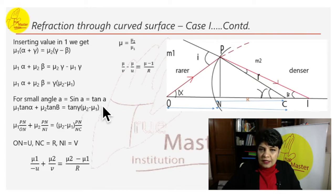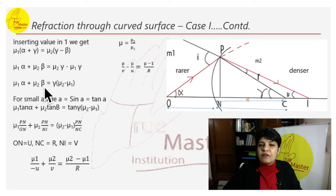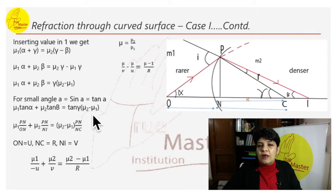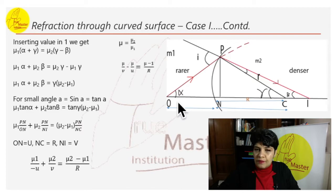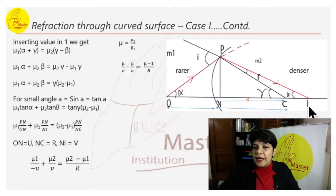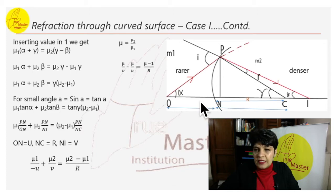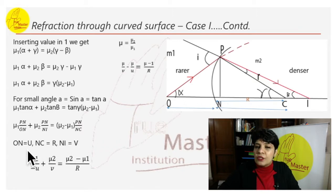For small angles, a can be written as sin a or tan a. Substituting tan in front of each angle: mu_1 · tan(alpha) + mu_2 · tan(beta) = (mu_2 − mu_1) · tan(gamma). The value of tan(alpha) is PN over ON; tan(beta) is PN over NI; tan(gamma) is PN over NC. The distance ON is where the object is placed, so ON equals u.